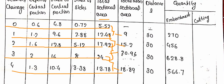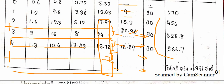The distance between stations is 30 meters. Volume (quantity) = mean sectional area × distance: 9.0 × 30 = 270; 15.2 × 30 = 456; 20.96 × 30 = 628.8; 18.89 × 30 = 566.7 cubic meters. Total volume = 270 + 456 + 628.8 + 566.7 = 1921.5 cubic meters.